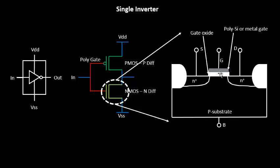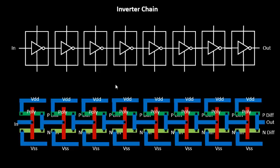That gate oxide is what we are focusing on for oxide thickness variation. Before that, if you look into an inverter chain — as we covered in the last video — it looks something like this, with a flip-flop or clock-to-D pin connections and a chain of inverters.